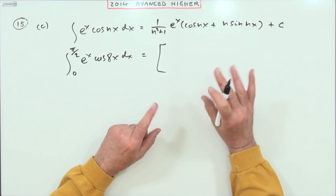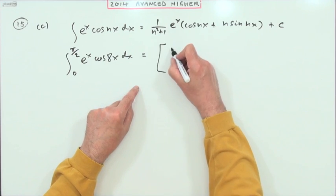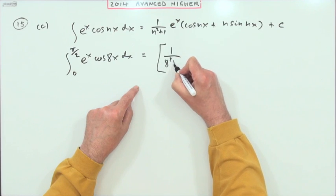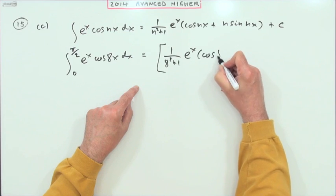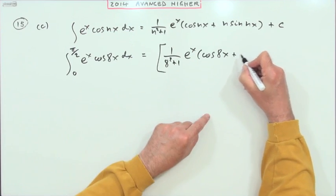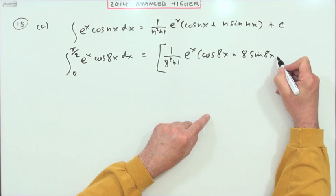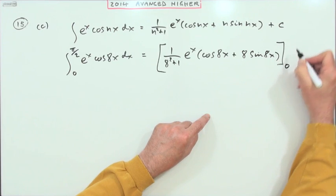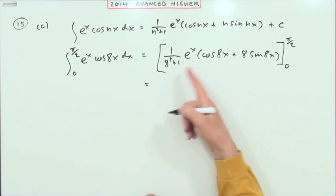So that will be, now n is equal to 8, so we'll start off with 1/(8² + 1) times e^x (cos(8x) + 8 sin(8x)), evaluated from 0 to π/2. Right, what have we got? Well, that's a common factor to both parts, so that's 1/65.